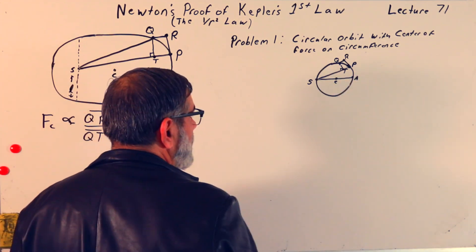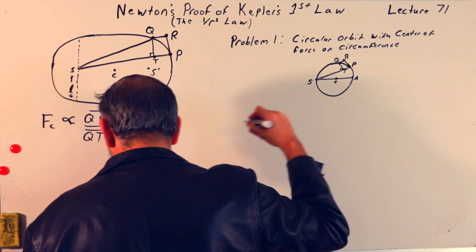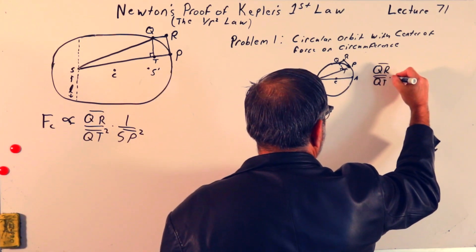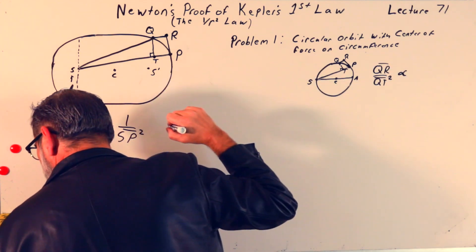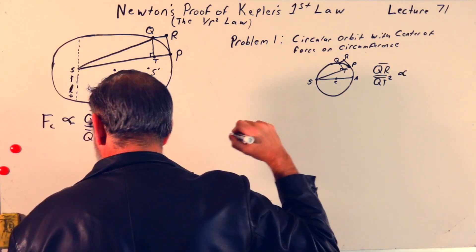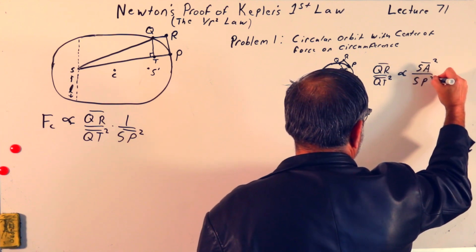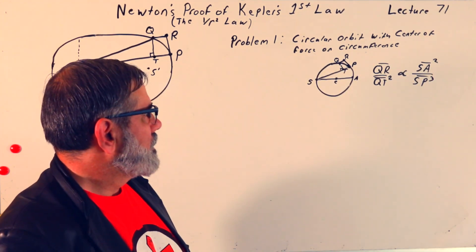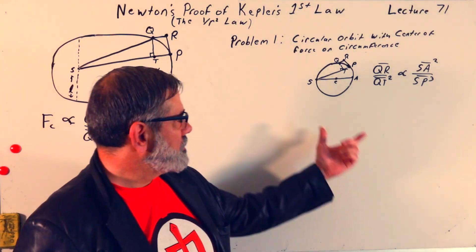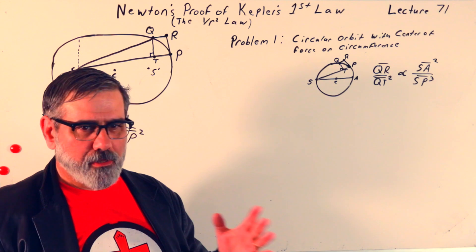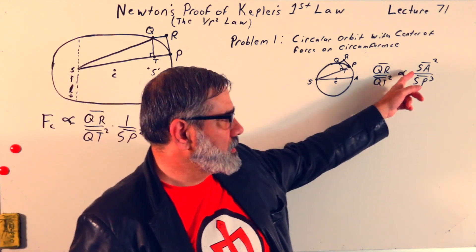He finds that QR over QT squared is proportional to, let me see here, SA squared over SP cubed. So, SA squared, that's fixed, that's a metric about the circle. So, for whatever particular circle you're talking about, that's going to be fixed.